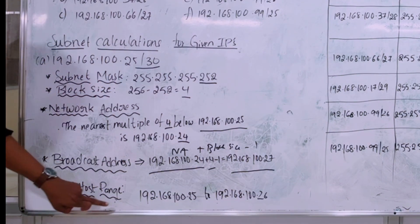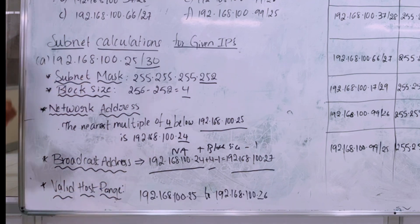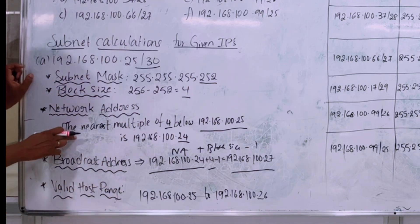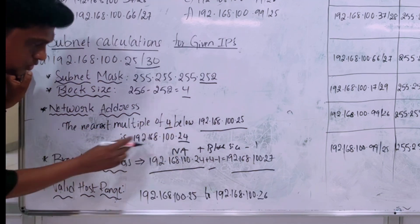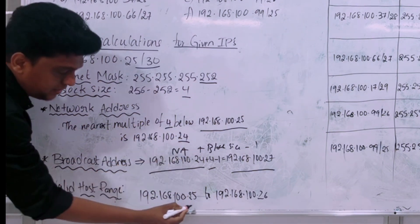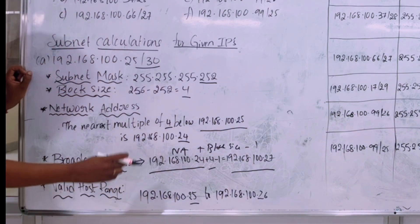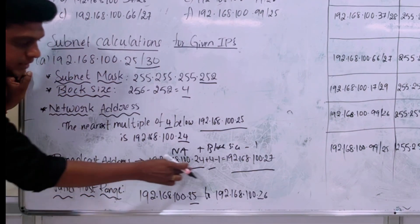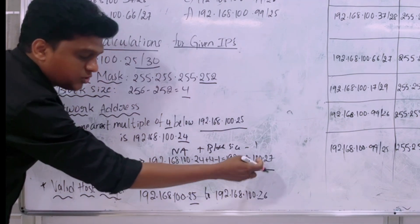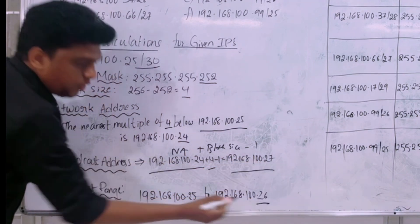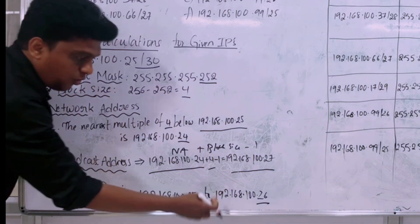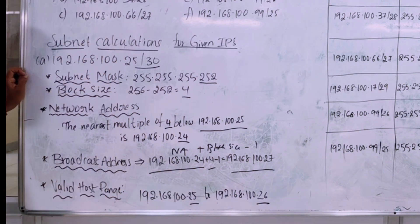The valid host range is found by adding one to the network address and subtracting one from the broadcast address. The network address is 24, so adding one gives 25. The broadcast address is 27, so subtracting one gives 26. Therefore, the valid host range is 192.168.100.25 to 192.168.100.26.